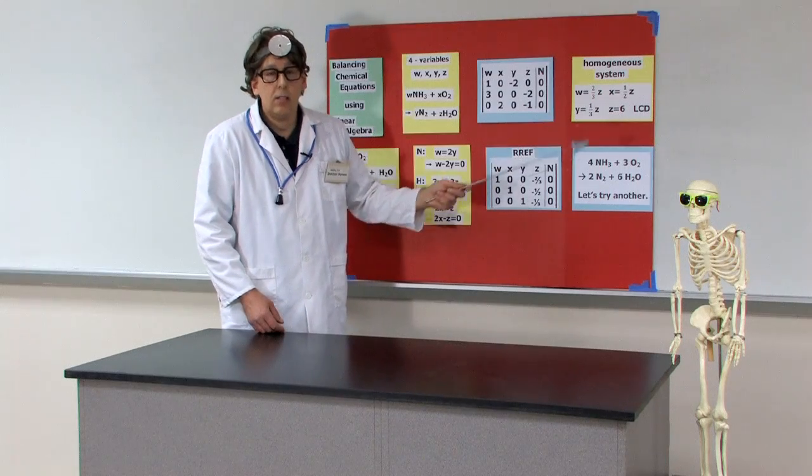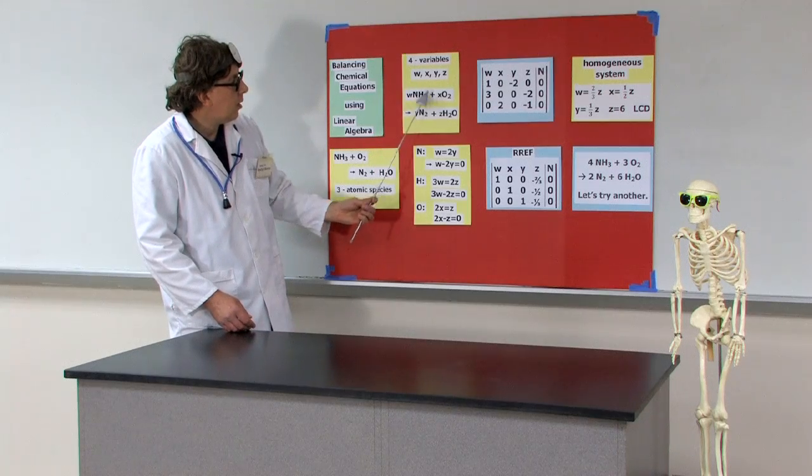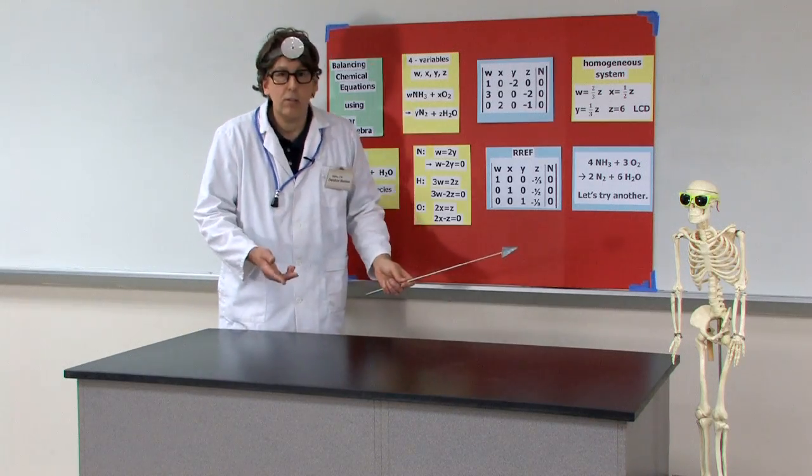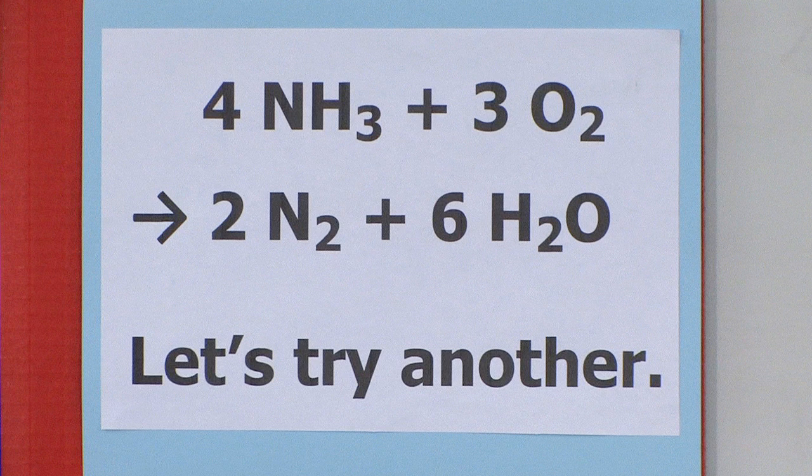Once we know Z is equal to 6, we can go back to the original equation, W X Y Z, and now place those variables in. And here we are. 4 ammonia molecules, 3 oxygen molecules react to form 2 nitrogen molecules plus the 6 water molecules.